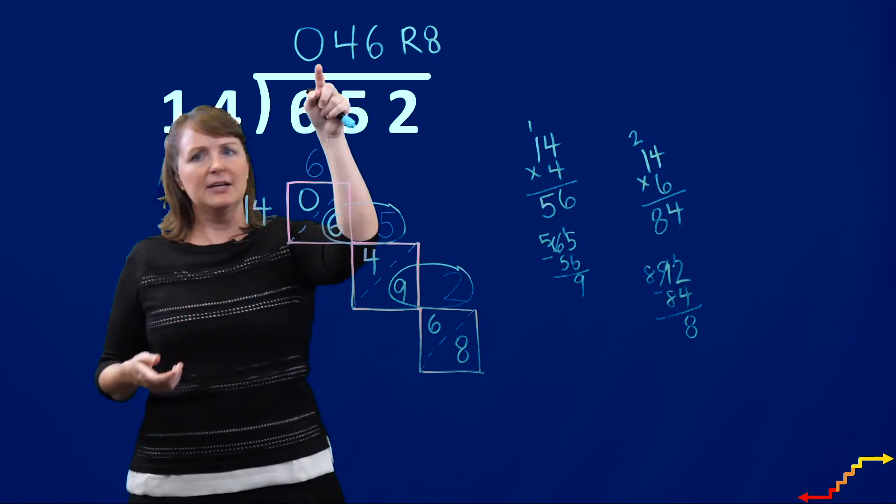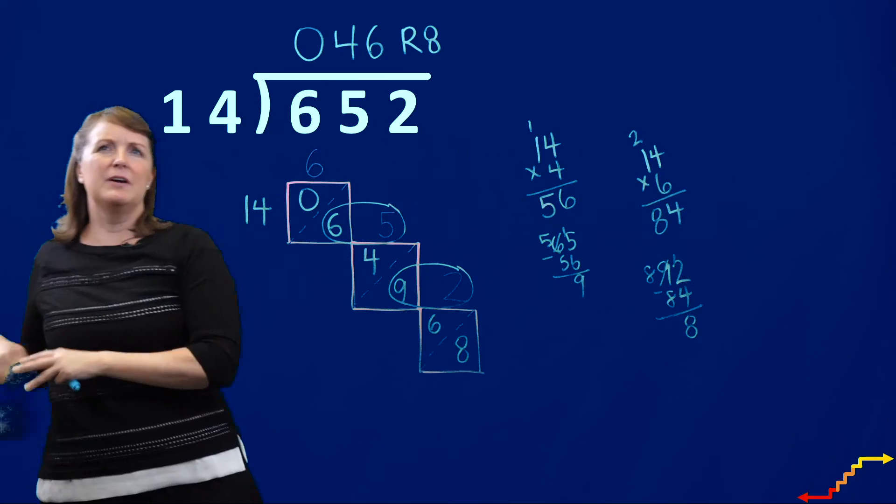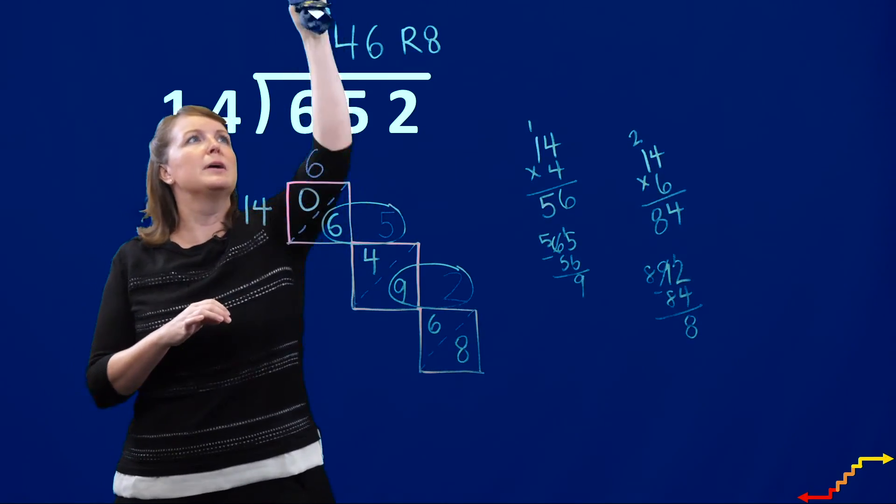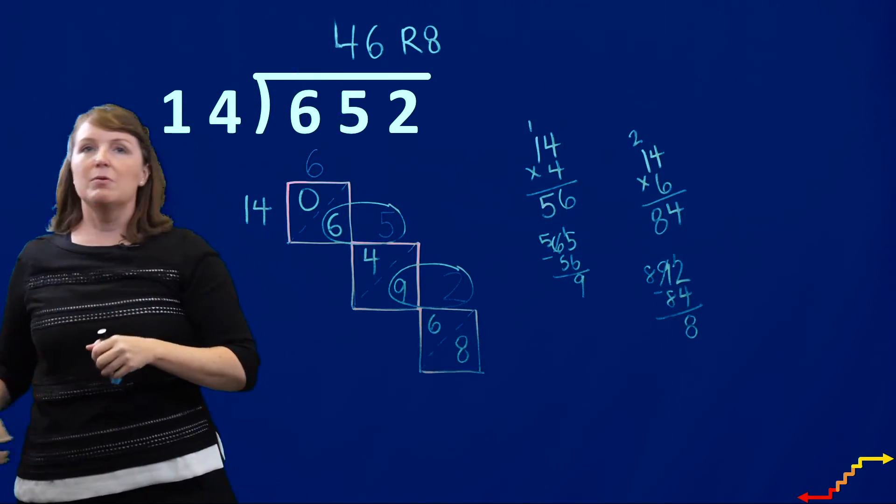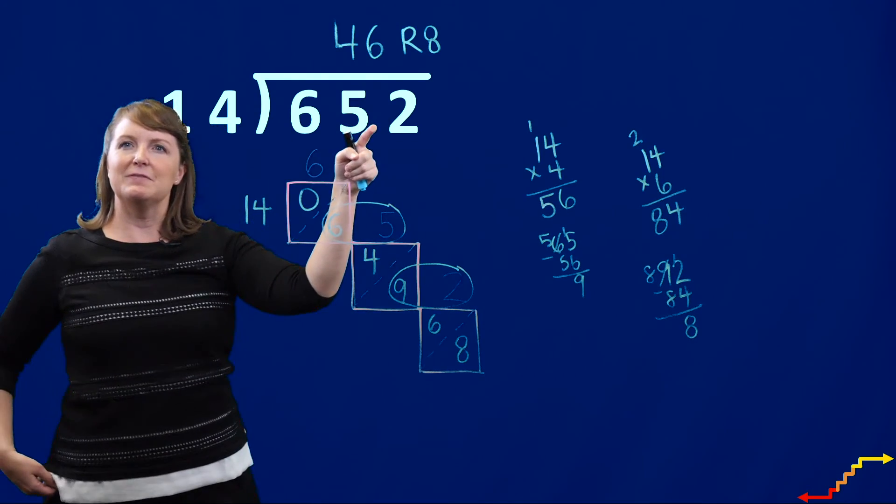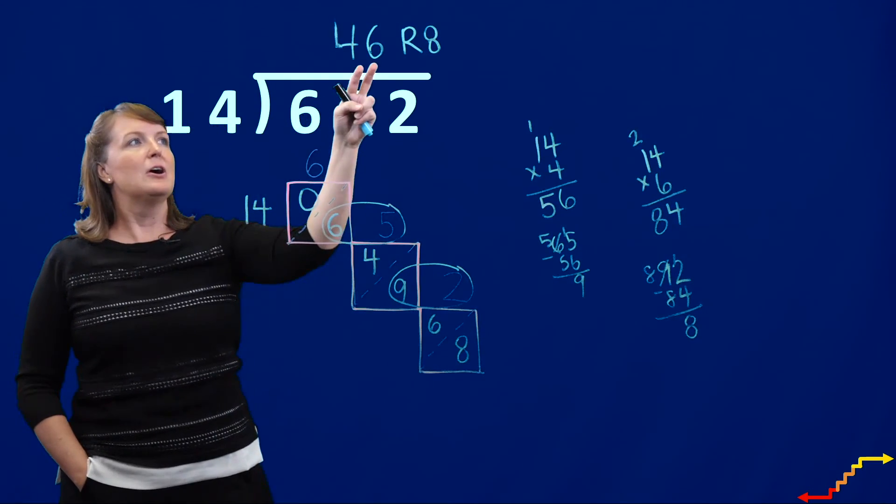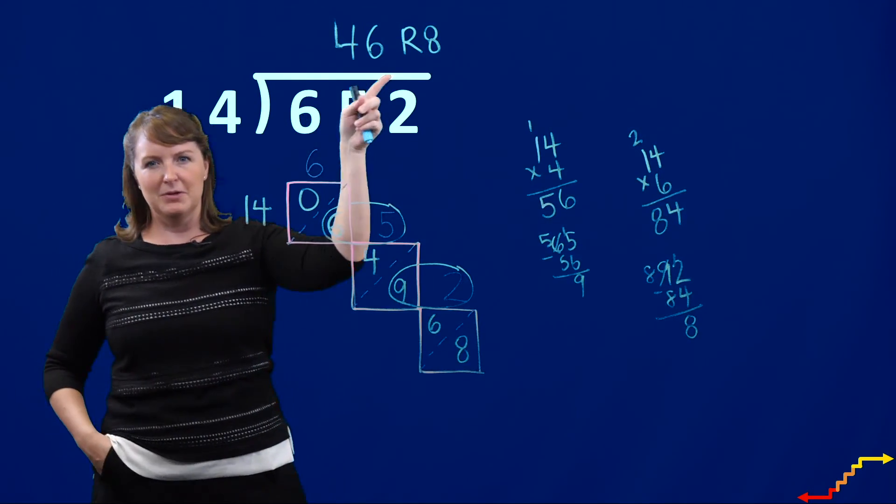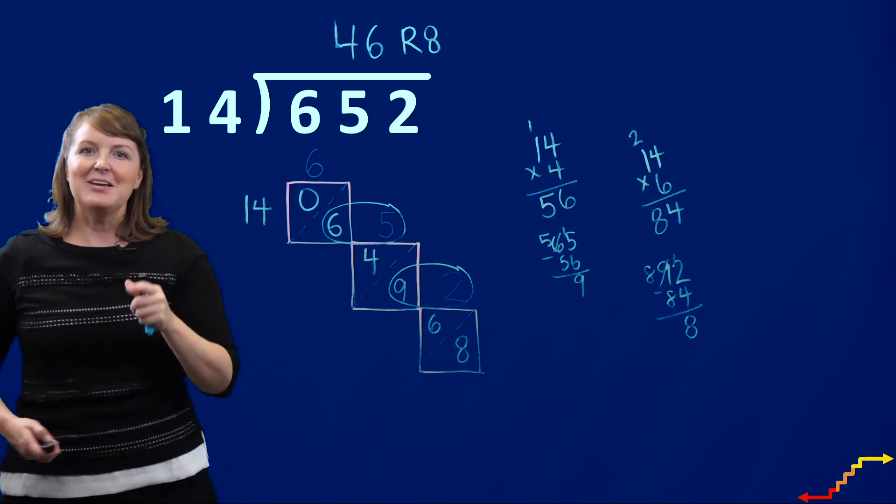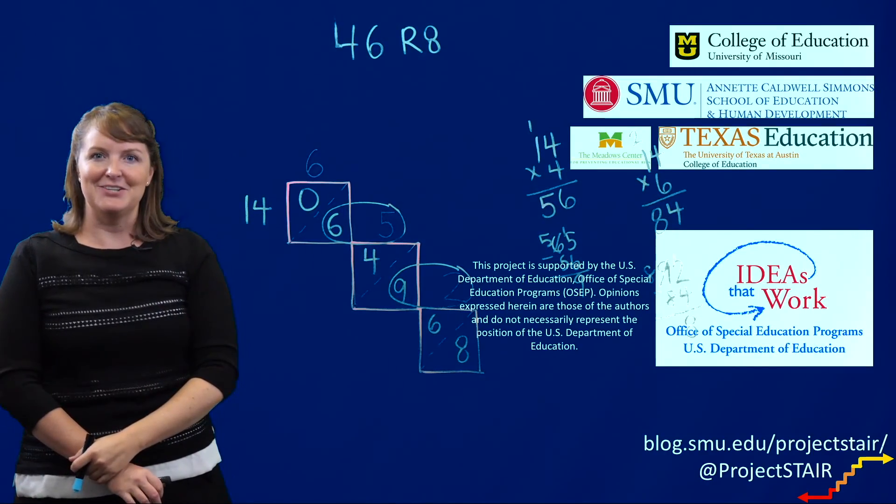And some of you may not like to have that zero as the place value holder, so I can just erase that. So to figure out our quotient, when we have 652 divided by 14, our quotient is 46 with a remainder of 8. Thank you so much for tuning into this Stare Tailored.